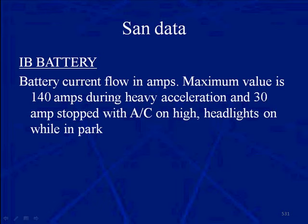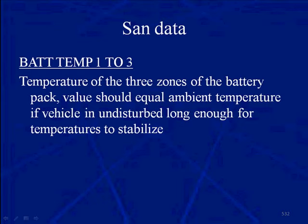The maximum battery current value is 140 amps during heavy acceleration and 30 amps stopped with the HVAC on high and headlights on while in park. Battery temp 1, 2, 3.